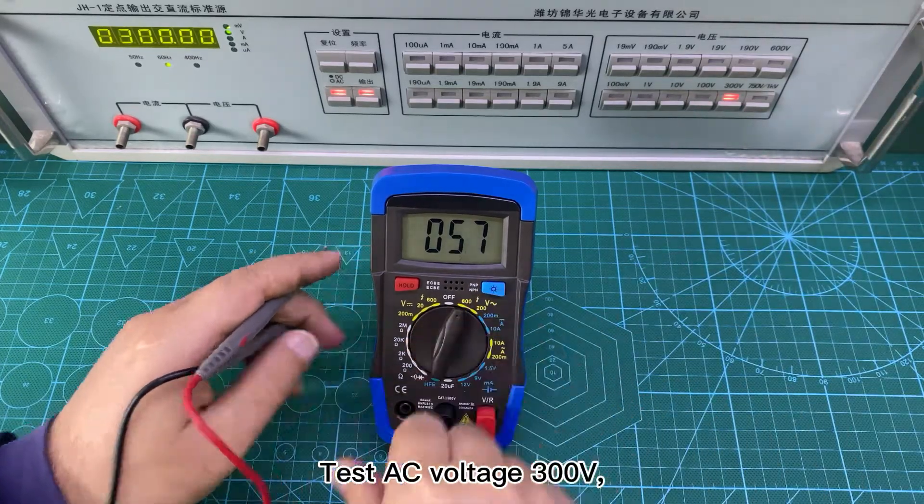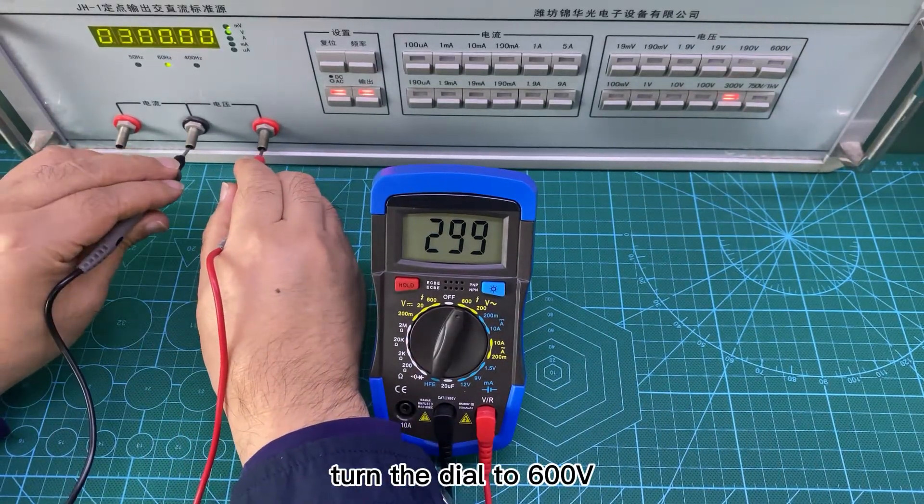Test AC voltage 300V, turn the dial to 600V.